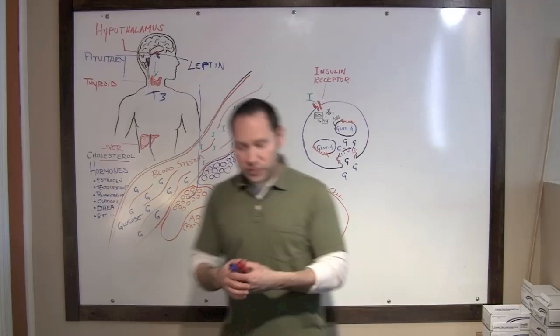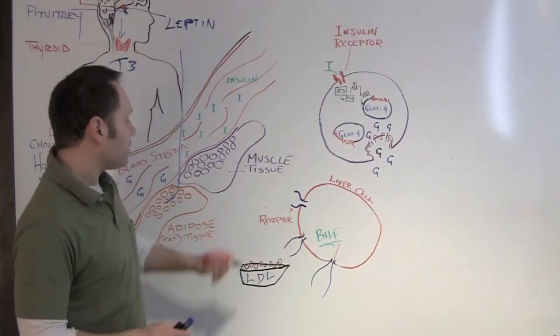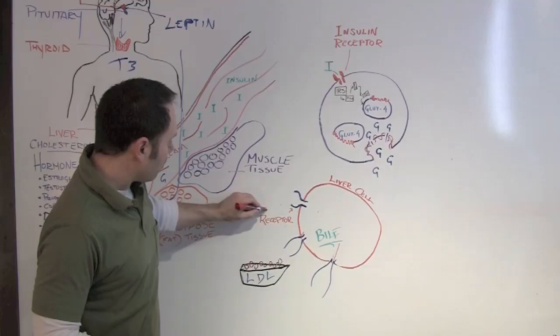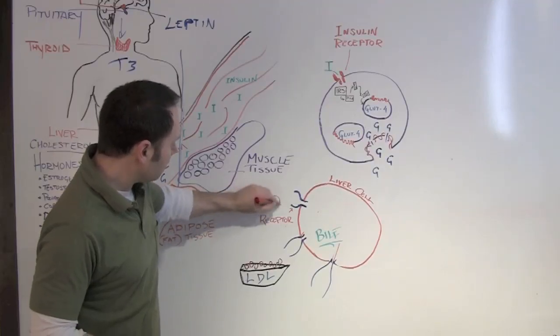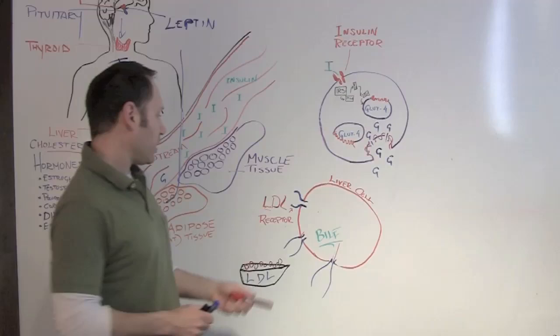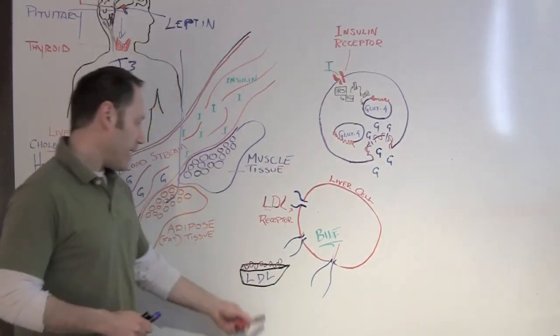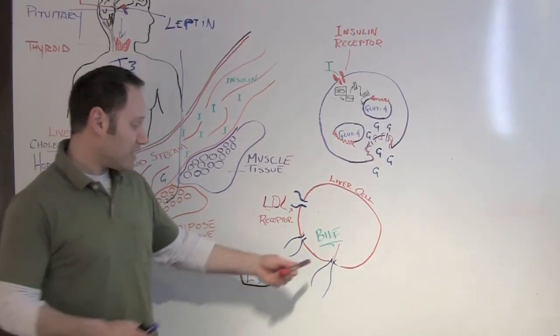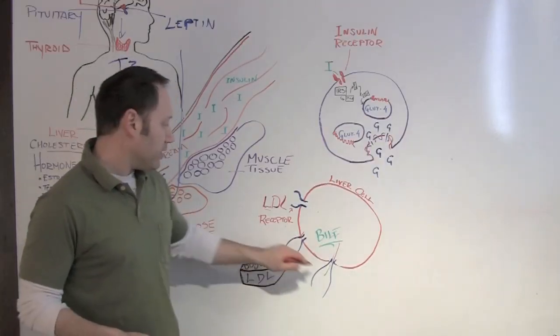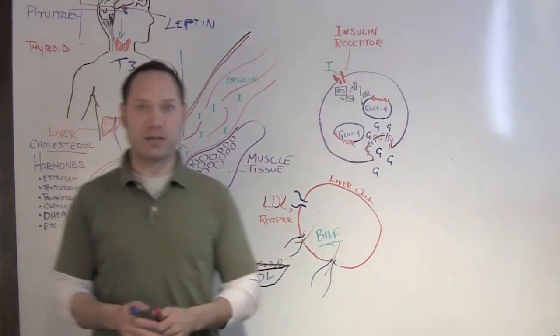On the surface of this liver cell, you have receptors called LDL receptors. As you might imagine, the job of these LDL receptors is to catch these LDL particles, these boats, as they float by. And that's how cholesterol gets up into the cell where it can do its job to help make bile.